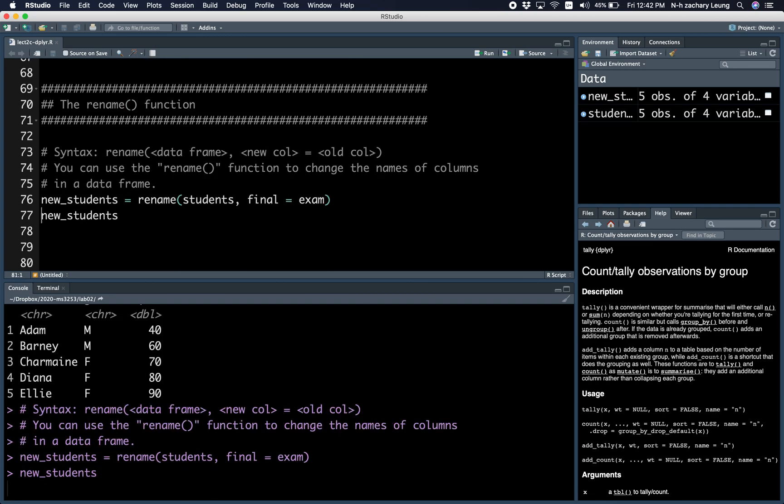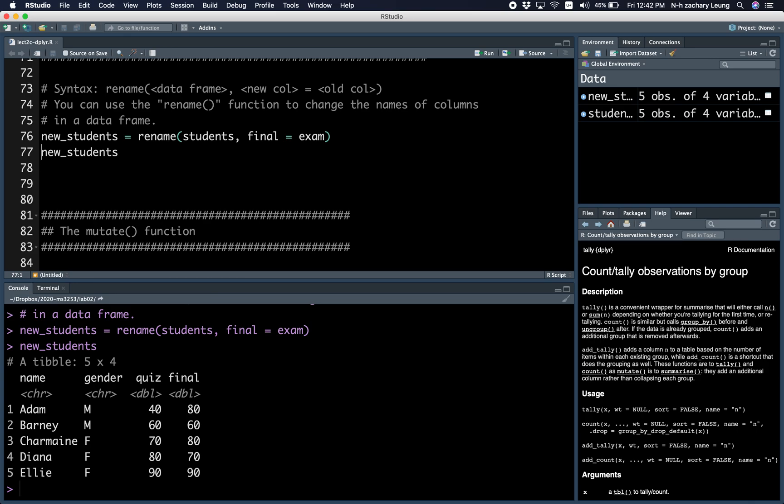Notice here I saved it in a new variable called new students because I don't want to change the original students data frame. So the new students data frame, the column is called final, but if you go back to the original students data frame, the column is still called exam.